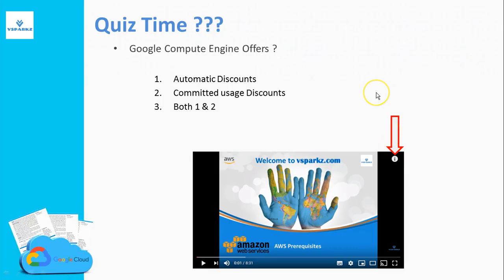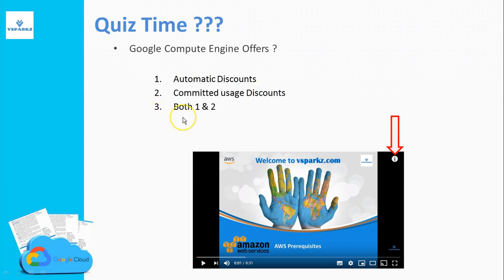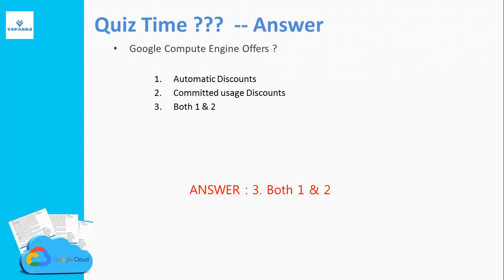Now it's quiz time. Answer this quiz by pressing the top right corner icon on your screen. The question is: Google Compute Engine offers what type of discount? Option 1: automatic discounts. Option 2: committed usage discounts. Option 3: both 1 and 2. The answer is Option 3 — both 1 and 2. Google Compute Engine offers both automatic discounts and committed usage discounts.